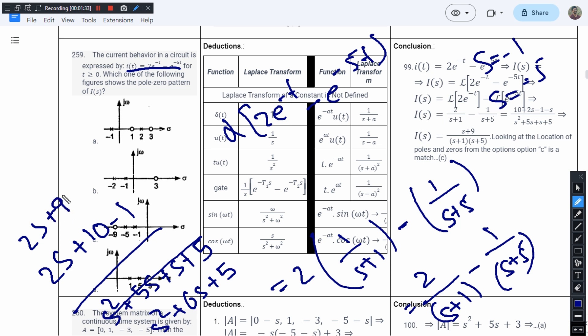There has been a small mistake, I need to make corrections. This should be s plus 9 instead of 2s plus 9. Here I have minus 1 and here I have minus s, so it will be s plus 9. The zero will be s equals -9.